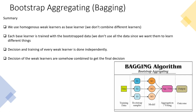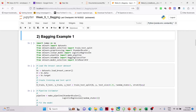In summary for bagging: we use homogeneous weak learners as base learners; each base learner is trained with bootstrap data; training and decisions of every weak learner are done independently and in parallel; and the weak learners' decisions are somehow combined to get the final decision.